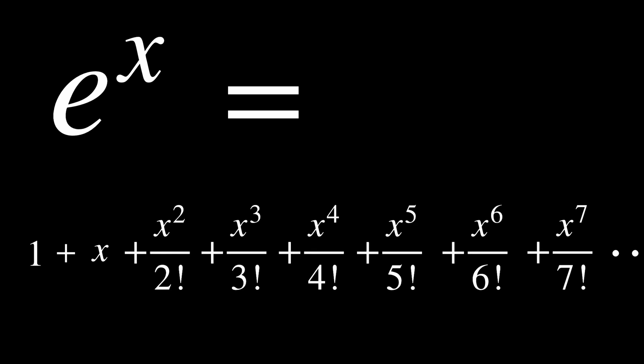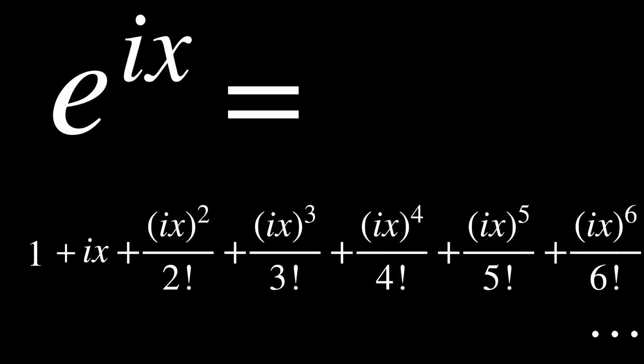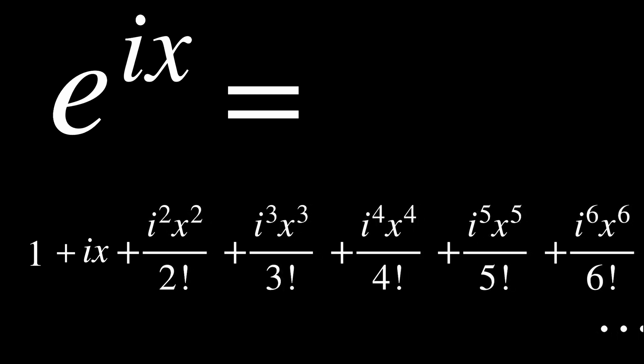Now, back to our series. What happens if we substitute i times x for x? e to the i x doesn't make sense as repeated multiplication, so we need to substitute it into the Taylor series. Everywhere we see an x, we can replace it with i times x. This is what we get after distributing the exponent. Now, we can simplify this a little bit.